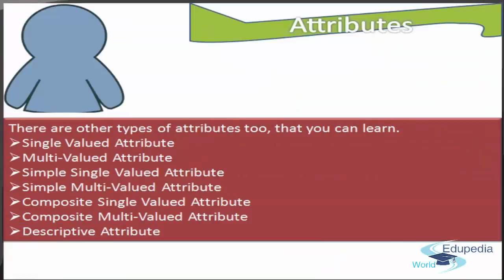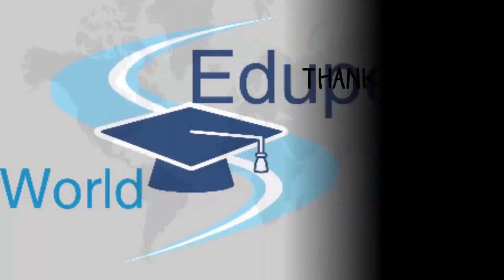There are other types of attributes as well, such as single-valued attribute, multi-valued attribute, simple single-valued attribute, simple multi-valued attribute, composite single-valued attribute, composite multi-valued attribute, and descriptive attribute. To be continued.